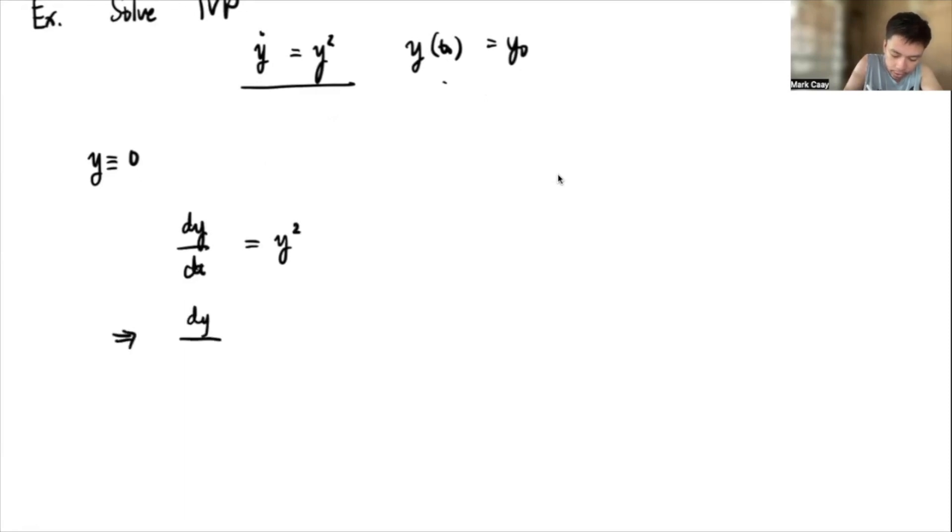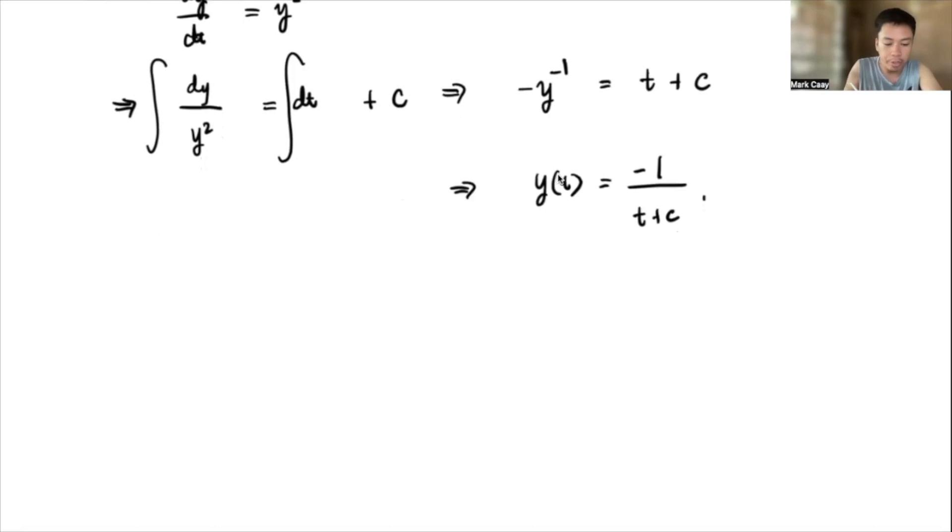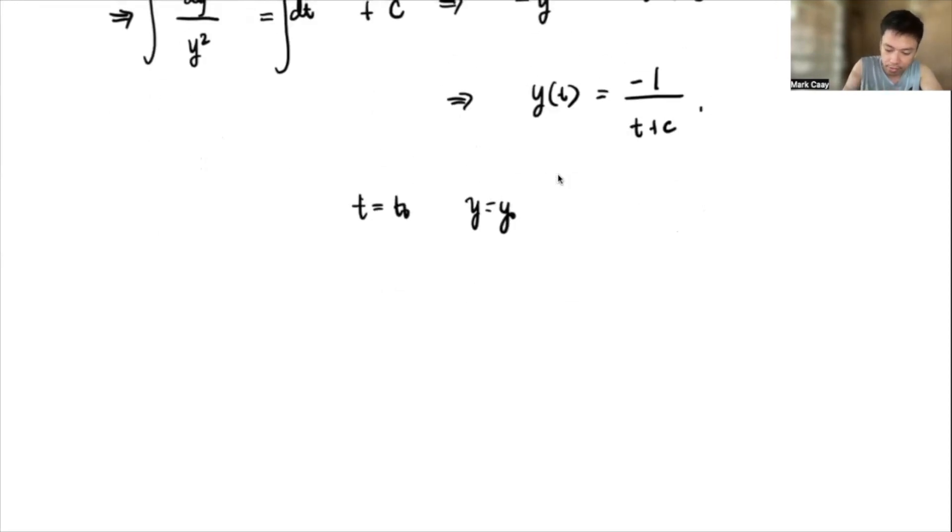Now, let's double check first the solution of this one. Remember that this given differential equation, I can write that as dy/dt equals y squared. And so I would get dy/y² equals dt. And so if I'm gonna take the integral of both sides, this becomes -y^(-1) equals t plus c. And so if I'm gonna convert this, this is negative 1 over (t plus c). So this is now the explicit solution for the given differential equation.